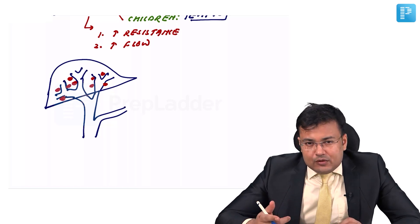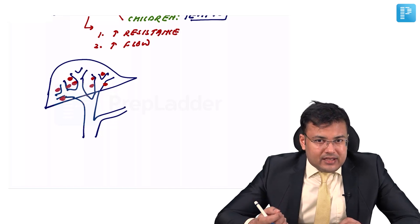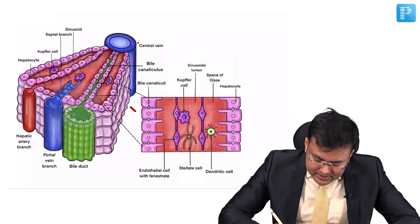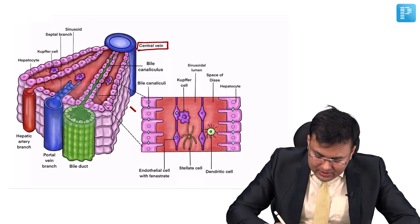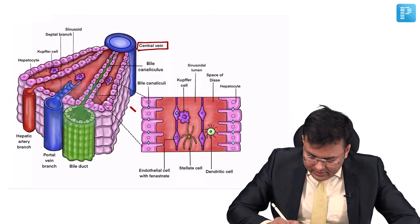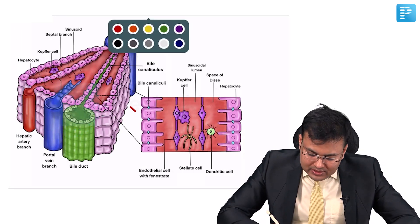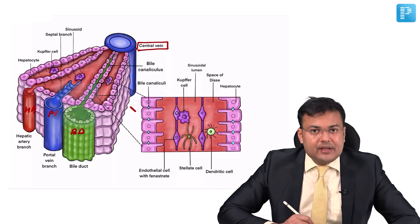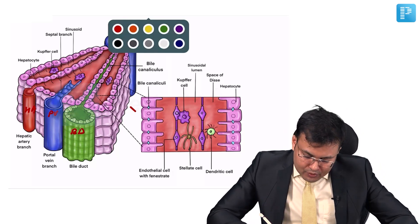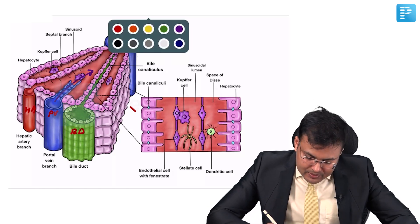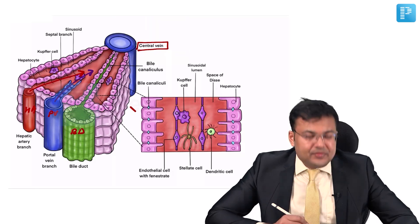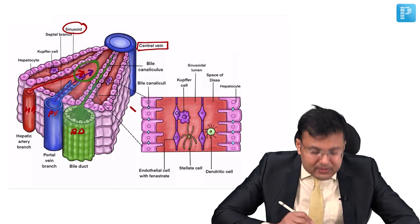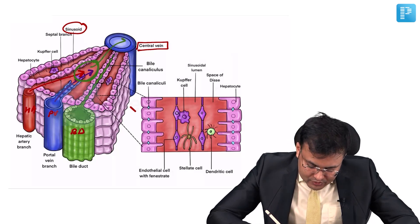The etiology of portal hypertension can be pre-sinusoidal, sinusoidal, post-sinusoidal, intrahepatic, or extrahepatic. Looking at the anatomy diagram: this is the central vein and this is the portal triad, which contains the portal vein, the bile duct, and a branch of the hepatic artery. Blood from the portal vein and hepatic artery goes into the sinusoid, where actual mixing of blood occurs, and finally drains into the central vein.